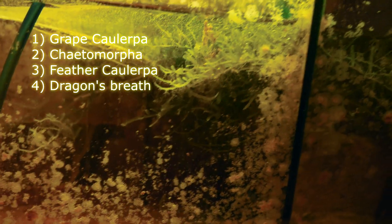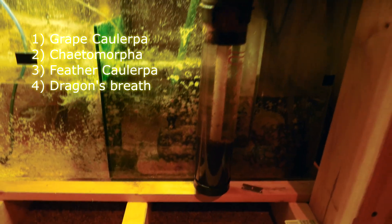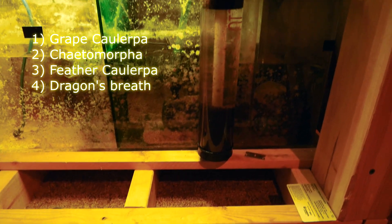Down in my sump, you'll also notice that I have four types of macroalgae. That is grape caulerpa, chaetomorpha, feather caulerpa, as well as I believe it's dragon's breath. But I'm not sure. It's a red type of macro.